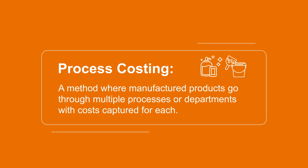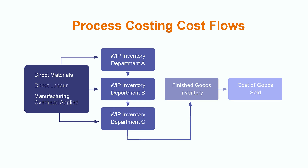Process costing is generally used in manufacturing units like steel, vegetables, oils, chemicals, etc. Under process costing, the costs are captured for each process or department.